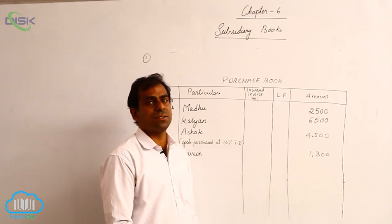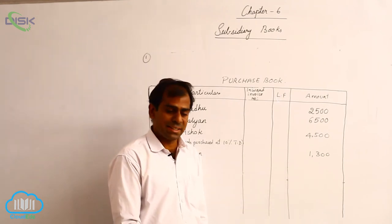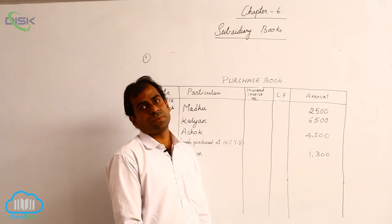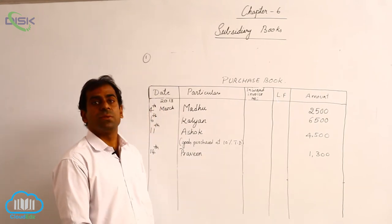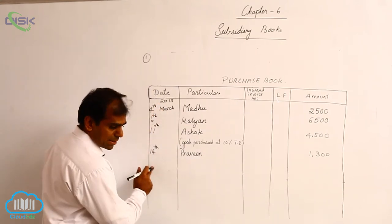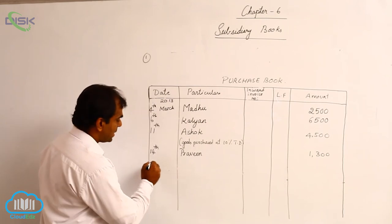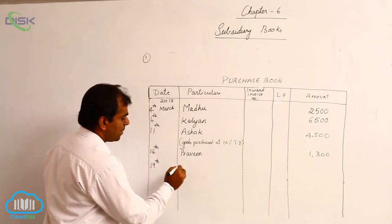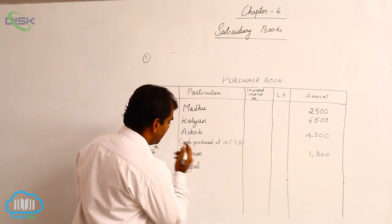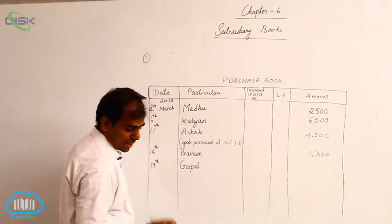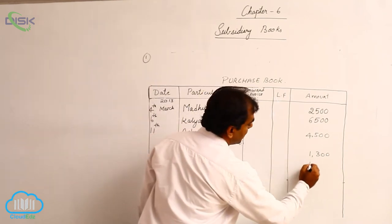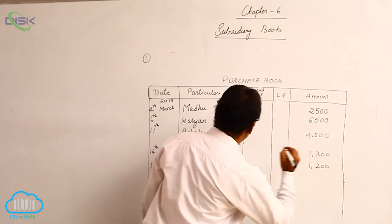Now the transaction on 19th: purchased goods from Gopal, rupees 1,200. Simply give the date 19th, mention the name of Gopal in the particulars column, and enter the amount in the amount column.